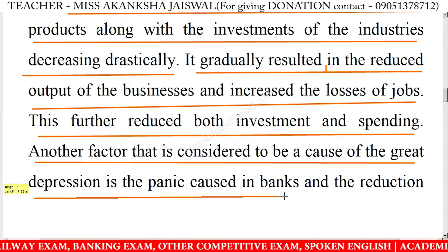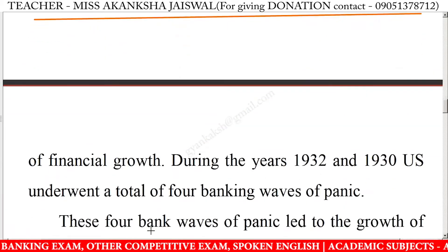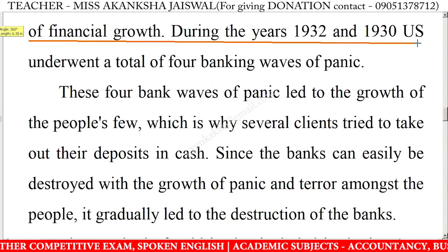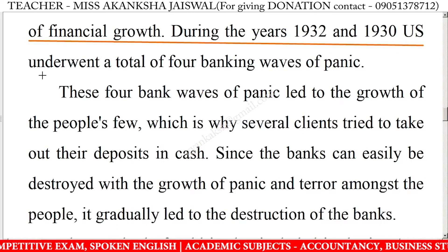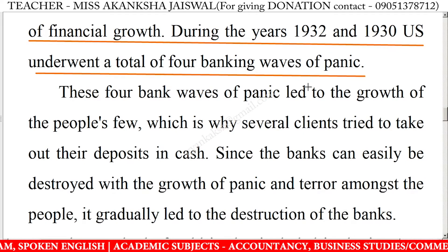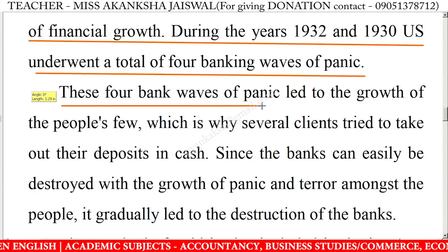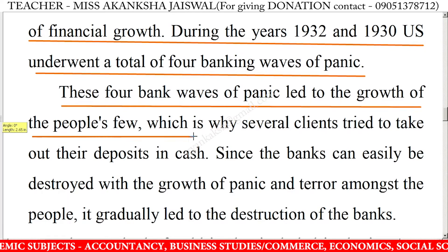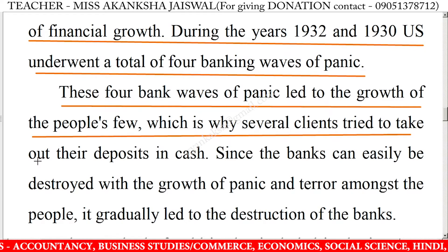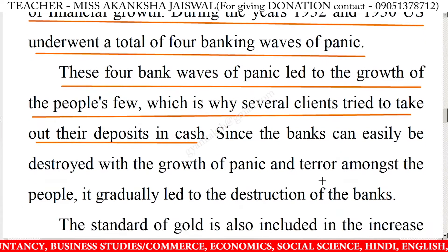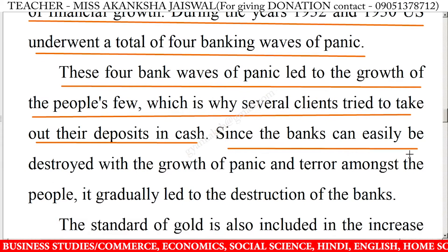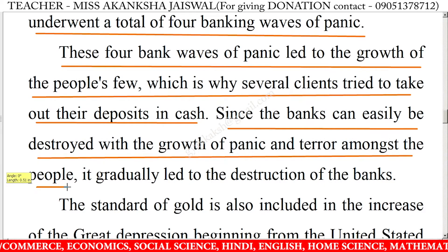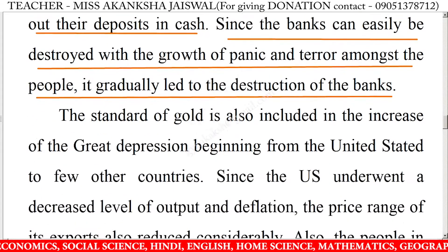Another factor considered to be a cause of the great depression is the panic caused in banks and the reduction of financial growth. During the years 1930 and 1932, the U.S. underwent a total of four banking waves of panic. These led to the growth of people's fear, which is why several clients tried to withdraw their deposits in cash. Since banks can easily be destroyed with the growth of panic and terror, this gradually led to the destruction of the banks.